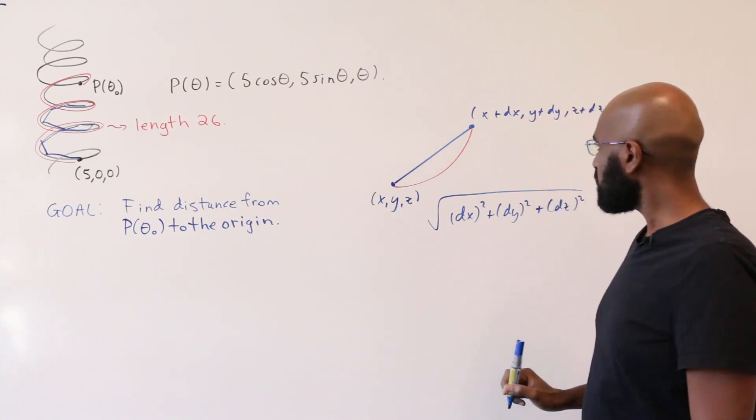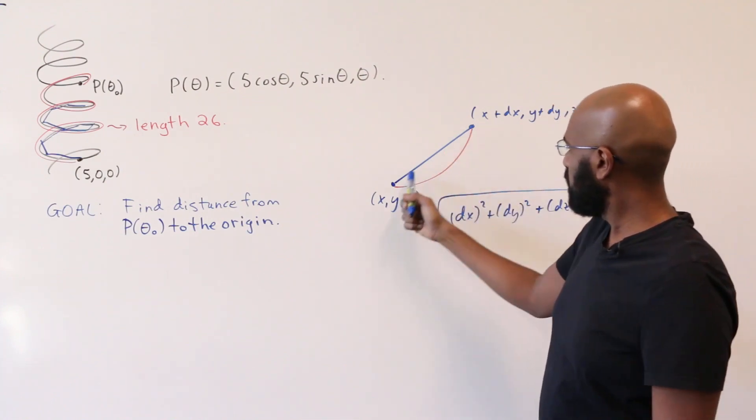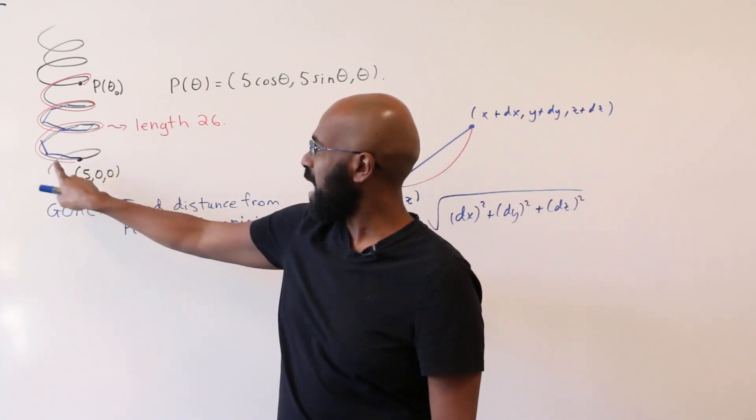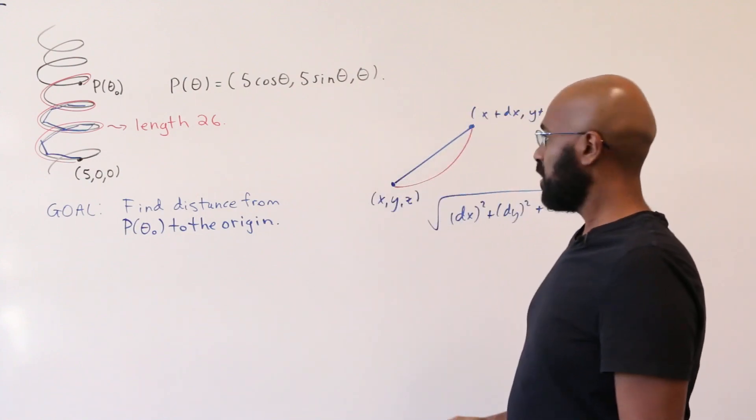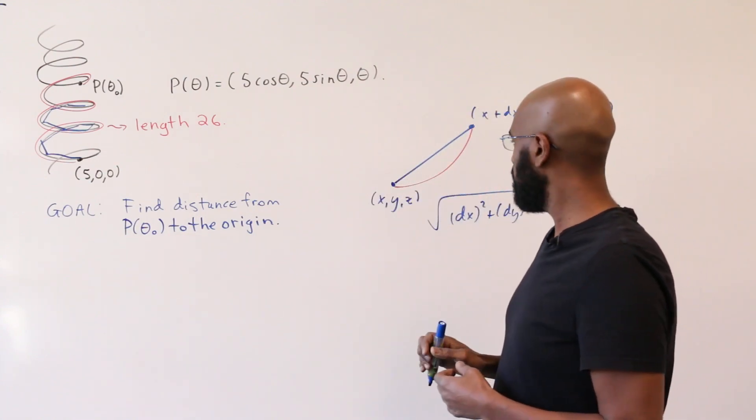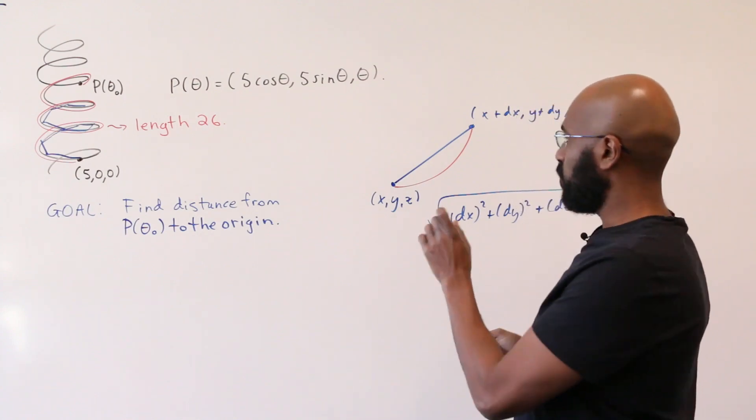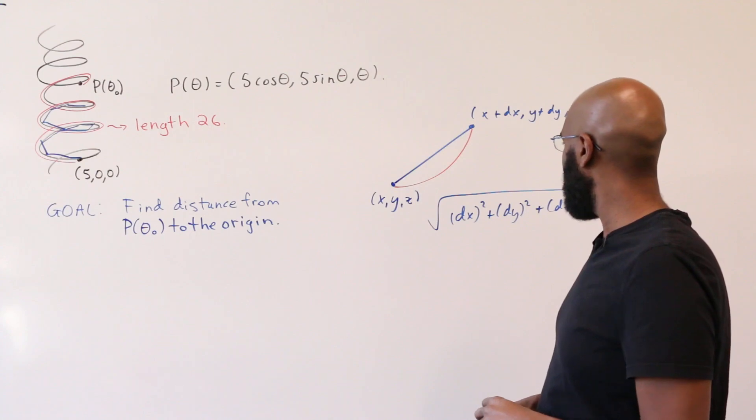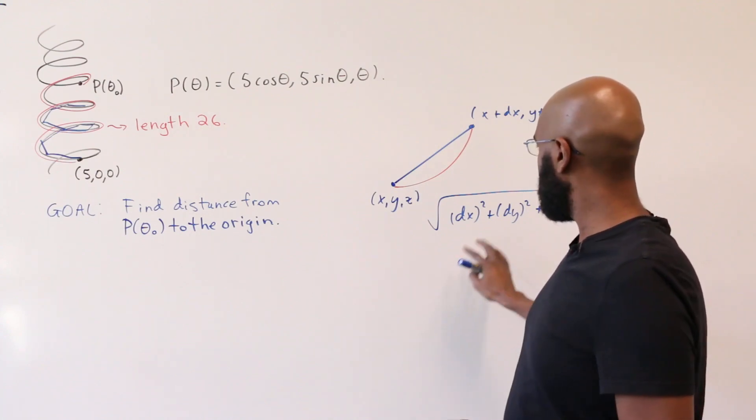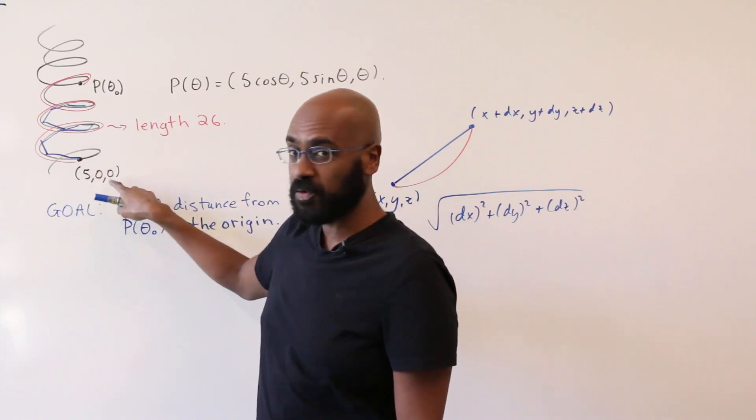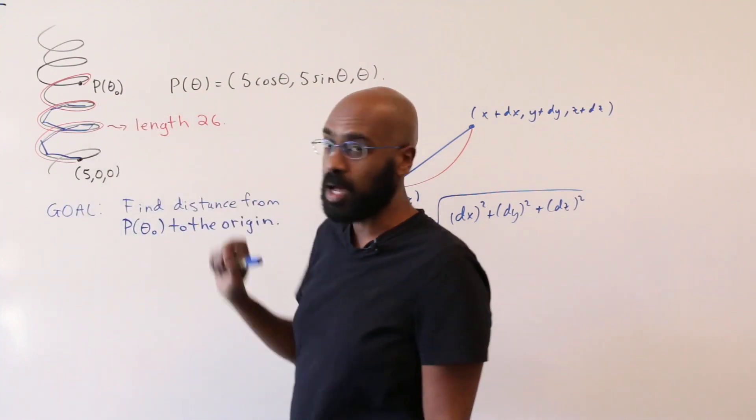Okay, so that's the length of this line segment that's used to approximate this one piece. Now we're adding up all of these line segments and doing it over infinitesimal distances. Adding up over a bunch of infinitesimal distances is what the integral is all about. So we'd be integrating this quantity for theta going from whatever theta is for this point to theta naught.